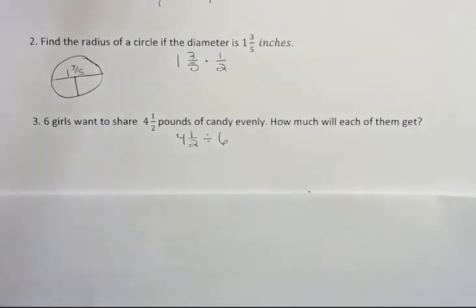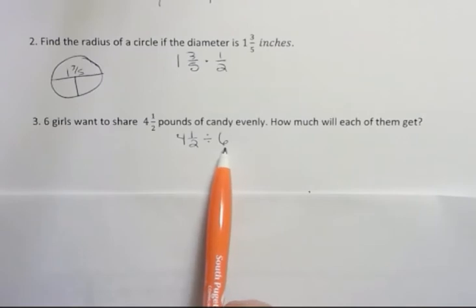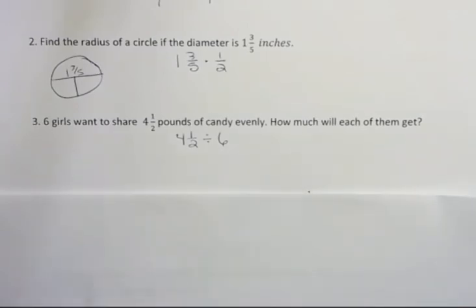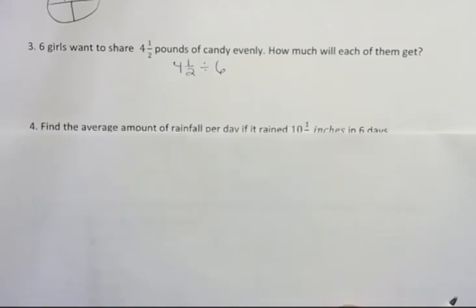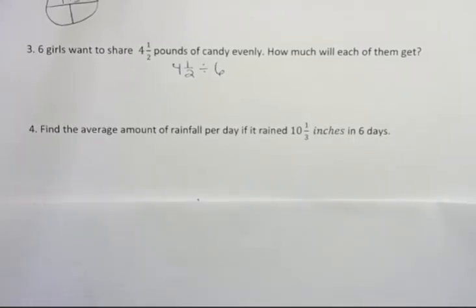In order to do this problem, you're going to need to change this into an improper fraction, put the six over one, then find the reciprocal of that and multiply after that. Okay. Again, that's a process on the last video. I want you to practice that by trying these problems.